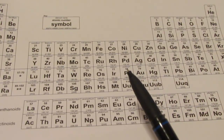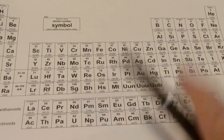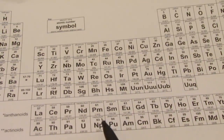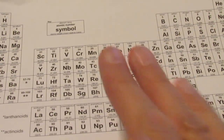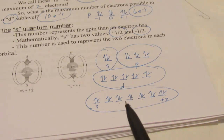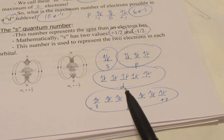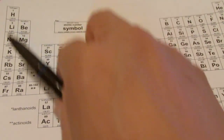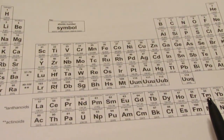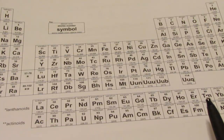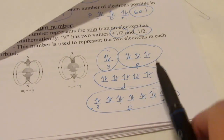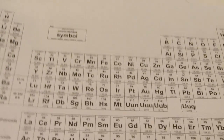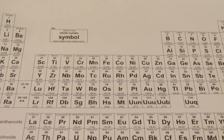An interesting note is that this basic design of the periodic table was around decades before we understood the wave-particle nature of the electron. It was quite interesting as things fell into place for the physicists and chemists who came up with these quantum numbers to describe the behavior of electrons, and how neatly it worked with the periodic table.